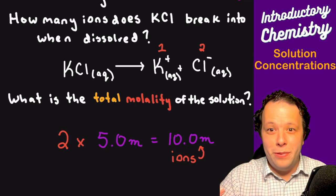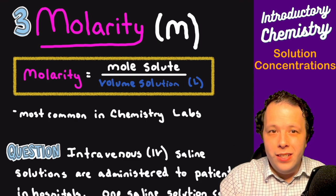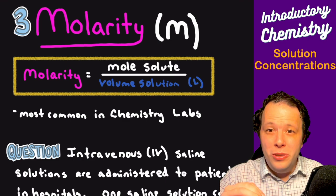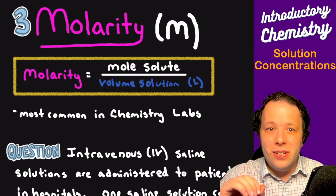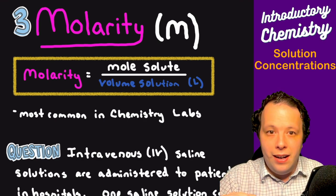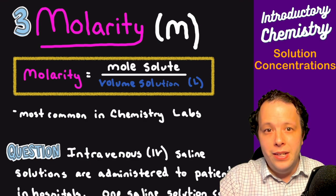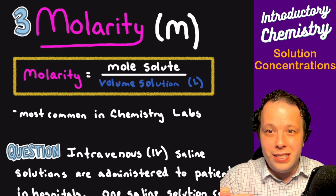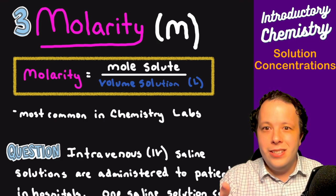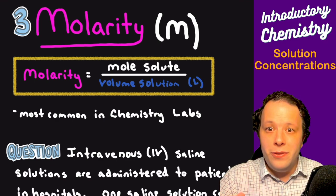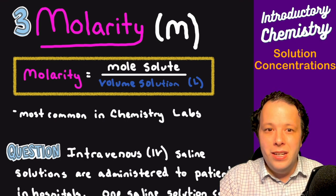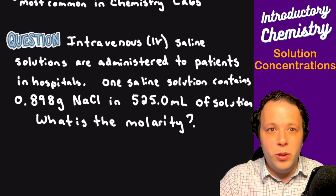Our last type of concentration is molarity — with the R — which is the amount of moles of the solute over the volume of solution in liters. This is arguably the most common concentration used in a chemistry lab. If you go into general chemistry, analytical chemistry, physical, or organic chemistry, you'll be using this a lot. I have two follow-up videos on molarity and dilution to help emphasize this concept. Let's practice using the formula.